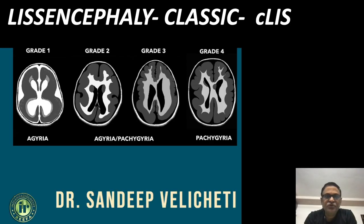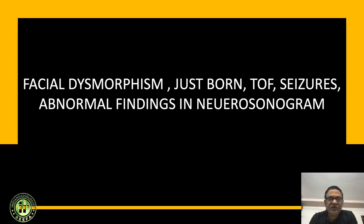Today I am going to present a short case about lissencephaly type one in its classic form. A just-born baby of three days old presented with facial dysmorphism — there are a few facial abnormalities which are described — tetralogy of Fallot, seizures. A neurosonogram was done and some abnormalities were found; that is the reason the patient was referred for MRI.